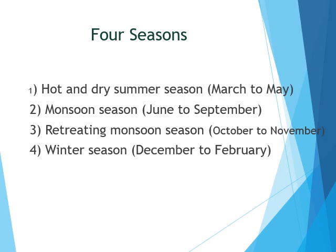India's climate consists of four seasons: (1) hot and dry summer from March to May, (2) the rainy season from June to September, (3) the retreating monsoon from October to November, and (4) the cold and dry season from December to February.